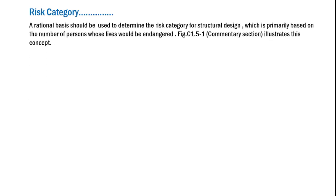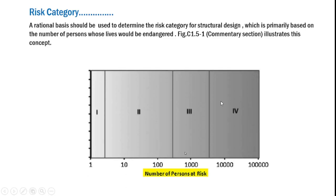Is there a simpler way of determining the risk category based on the number of people who occupy a structure? The commentary section of ASCE 7-22 provides Figure C1.5-1, which gives a rational basis to determine the risk category for structural design based on the number of persons at risk. Along the x-axis is the number of persons at risk on a log scale — for example, if the number of persons falls between roughly 300 and 3,000, the structure is preferably placed under category three. This figure is very helpful for correctly assigning a risk category directly based on the number of people at risk.